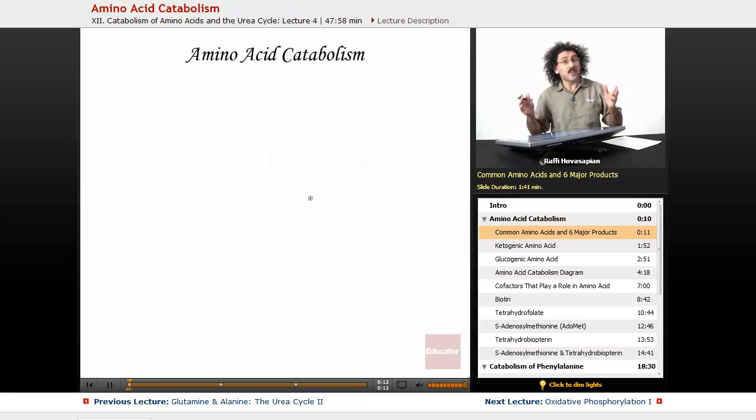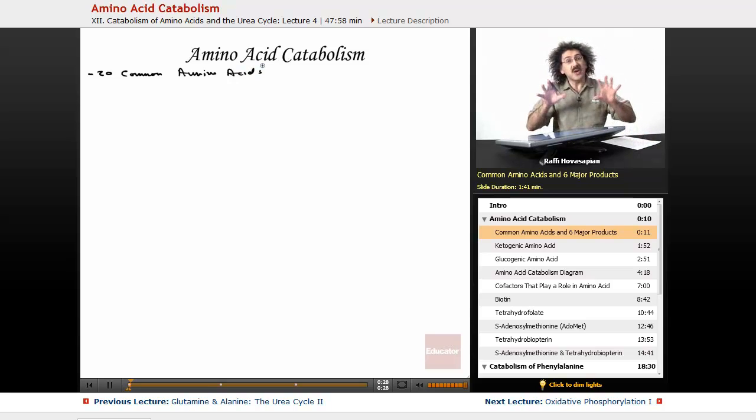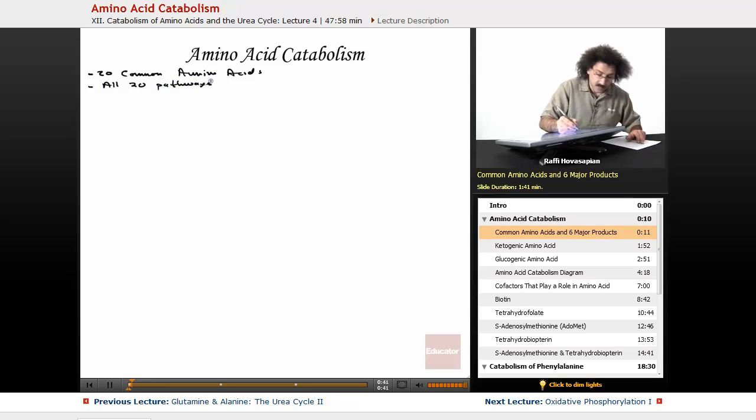We have about 20 common amino acids. All 20 of the pathways for amino acid catabolism converge to only six major products.